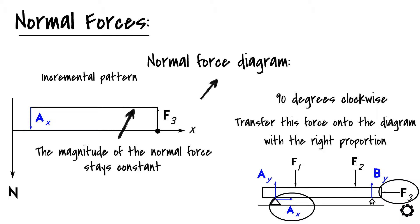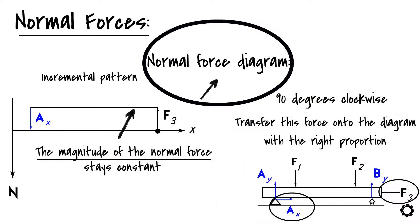One thing that you should always remember about the normal force diagram is that the magnitude of the normal force is zero at the end of the structure, like in the example shown, if it's not externally loaded. A good habit is to also mark the maximum and minimum loading values onto the diagram.